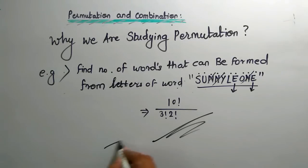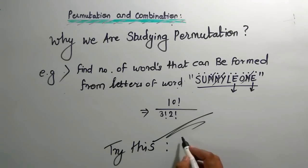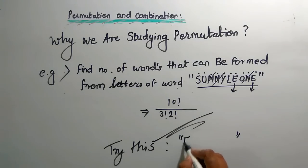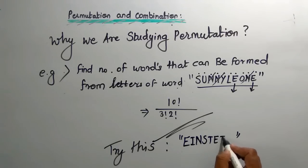Try this question on your own. The word is EINSTEIN — E, I, N, S, T, E, I, N — find the number of words that can be formed from the letters of EINSTEIN.